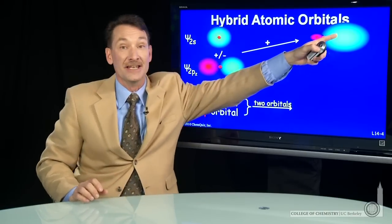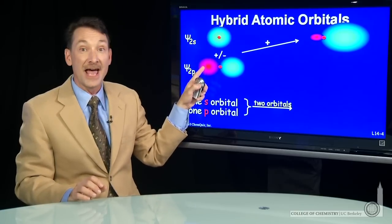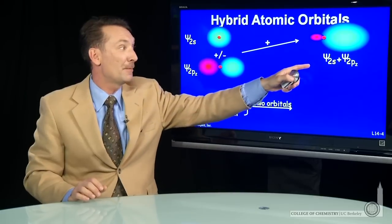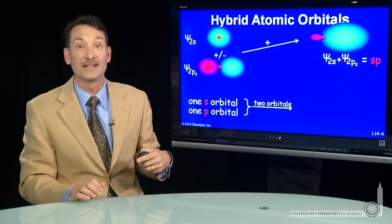The green and the green added, giving me higher amplitude, and the green and the red added, giving me lower amplitude. That's a new orbital. It's a combination of an S and a P. We'll call it an SP atomic orbital.